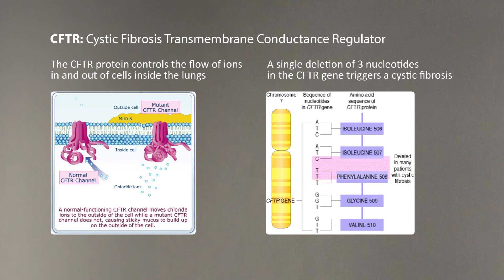They called the gene cystic fibrosis transmembrane conductance regulator, or CFTR. The CFTR protein controls the flow of ions in and out of cells inside the lungs. If a mutation happens inside the CFTR protein, then the flow of ions is disrupted, and it leads to cystic fibrosis.